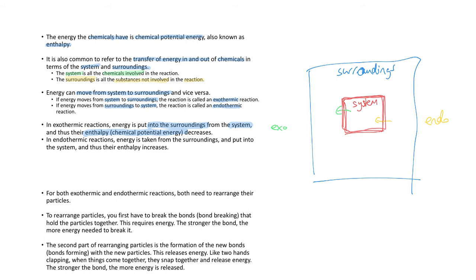In an endothermic reaction, energy is taken from the surroundings and put into the system, and thus the enthalpy increases — the chemical potential energy increases. So you can have chemical reactions that increase or decrease chemical potential energy.